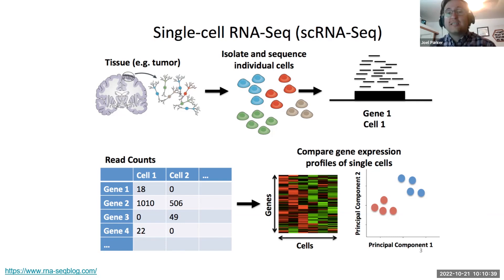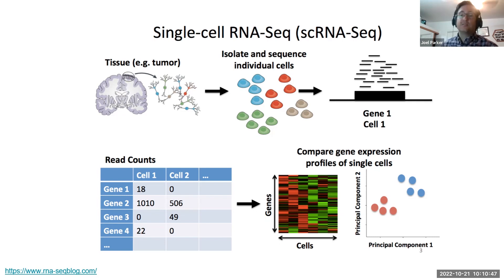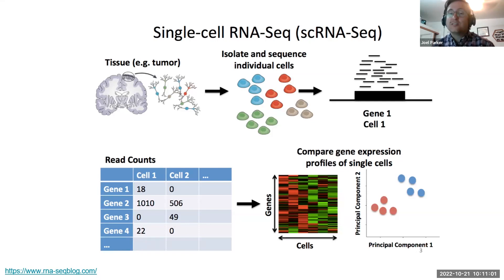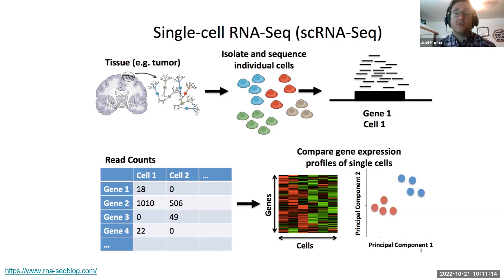The read count matrices contain the number of times each gene appeared in each cell. One of the main things to point out about single-cell RNA sequencing data is the number of zeros that appear in a dataset. A zero count can occur for two different reasons: a biological reason, meaning the gene did not actually appear in the cell; or a technical reason, meaning the gene does exist in the cell but was unidentified due to some step in creating the data. These issues lead to sparse data, which has led to the development of many novel statistical methods explicitly used for single-cell RNA sequencing.